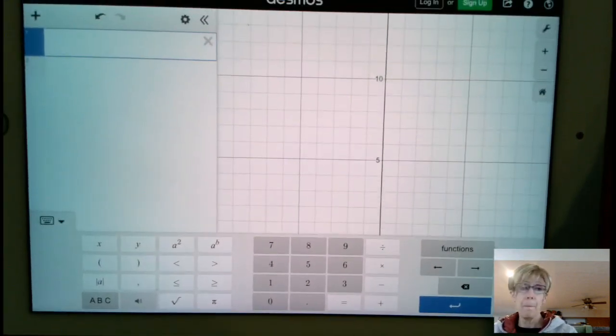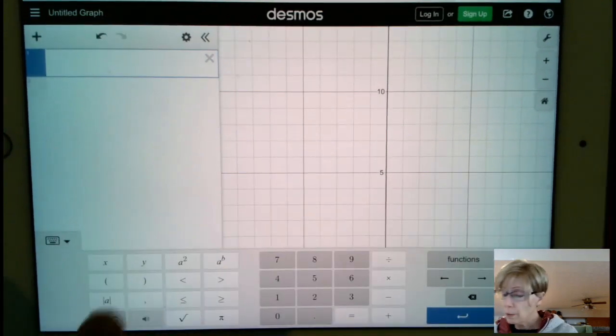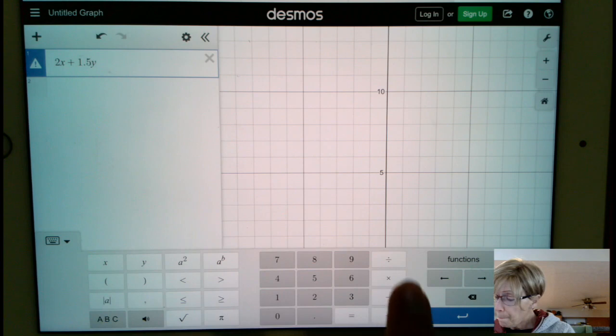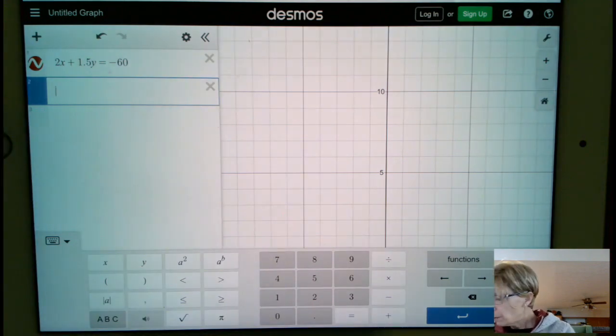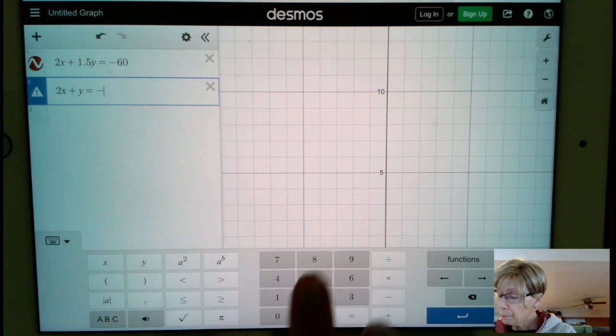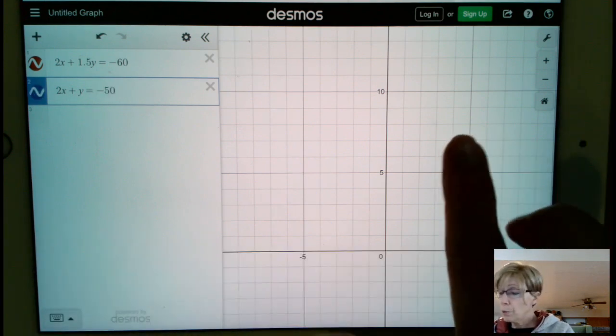The first equation is 2x plus 1.5y equals negative 60. I know you can't see it right now. Then we can do 2x plus y equals negative 50.